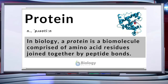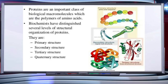Biomolecules in the macromolecular pool have molecular weight in the range of 10,000 Daltons or above. Protein is one such biomolecule. In biology, a protein is a biomolecule which is made up of amino acid residues joined together by peptide bonds. Proteins are polypeptides and they are linear chains of amino acids linked by peptide bonds.